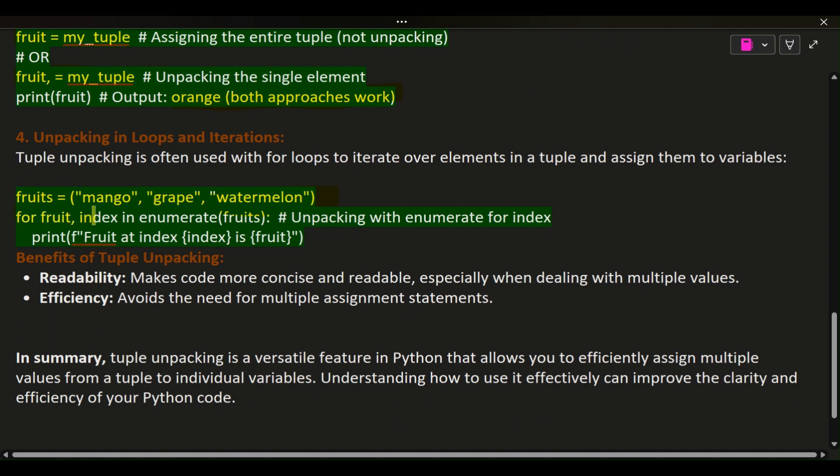for fruit, index in enumerate(fruits): # Unpacking with enumerate for index print(f'fruit at index {index} is {fruit}')